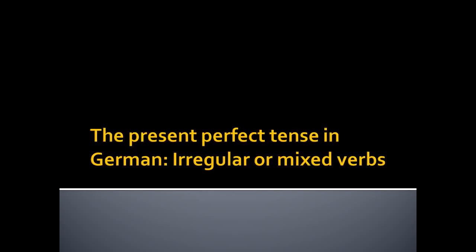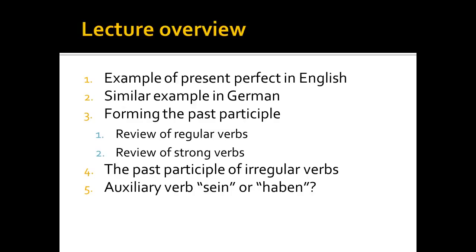Let's take a few moments to learn how to form the present perfect tense in German using irregular or mixed verbs. As usual, we'll begin the lecture with an example of how to form the present perfect tense in English. Once we're done with that, we will look at that same sentence translated into German. We'll see that the past participle is an essential part of the present perfect tense, and that irregular and weak verbs sort of have characteristics of both regular and strong verbs. We'll look at how to form the past participle of irregular verbs once we do a review of both regular and strong verbs. Finally, we'll conclude our lecture with a discussion of when to use the auxiliary verb sein and when to use the auxiliary verb haben when forming the present perfect tense.